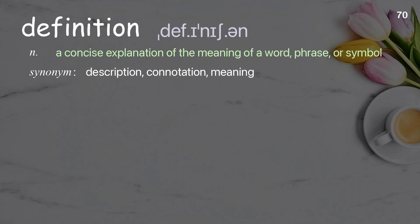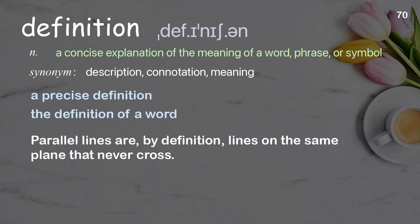Definition: a concise explanation of the meaning of a word, phrase, or symbol. Examples: a precise definition, the definition of a word. Parallel lines are, by definition, lines on the same plane that never cross.